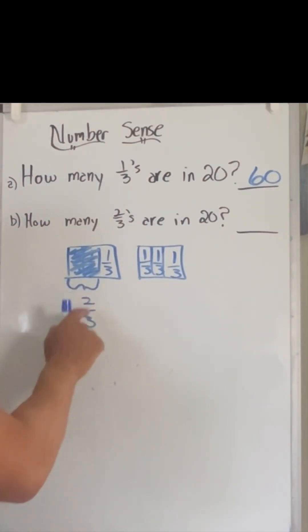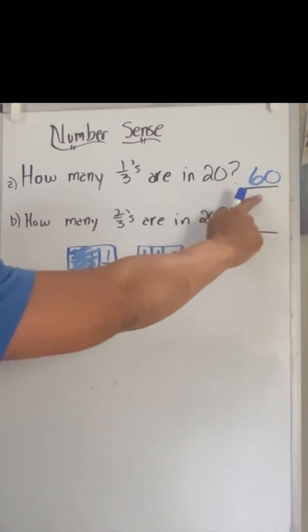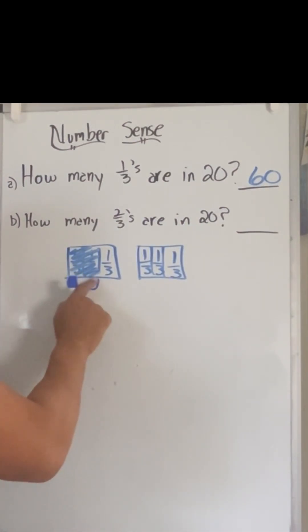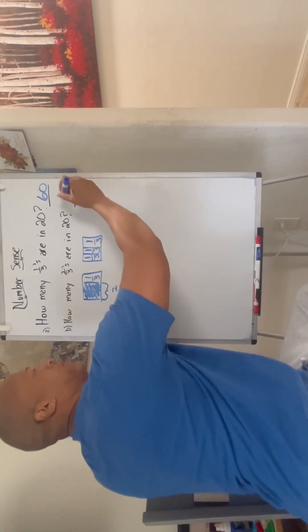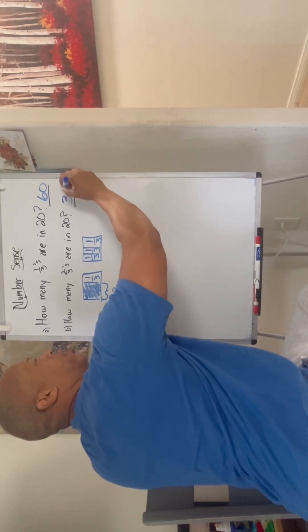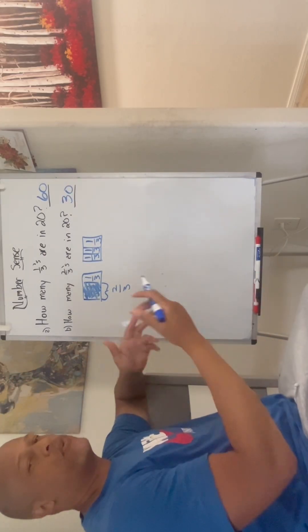And since it's two-thirds, we would say, well, we would divide that in half. So, because these are twice as big, so they take up twice as much room, we'd end up with two-thirds, and we'd end up getting 30 for our answer. Okay? These are great little problems.